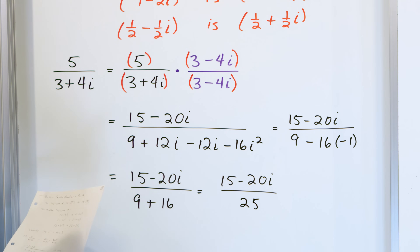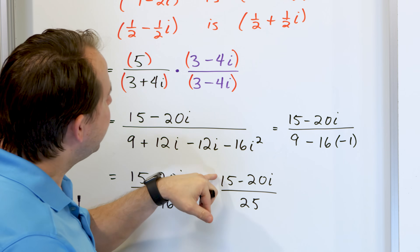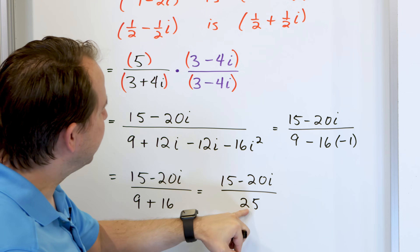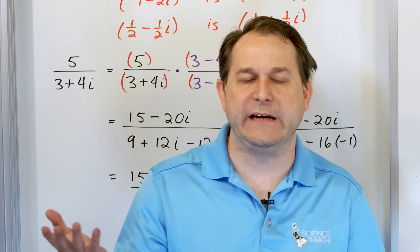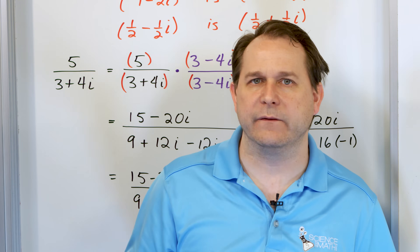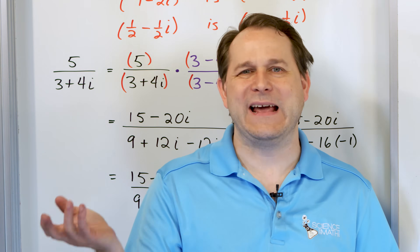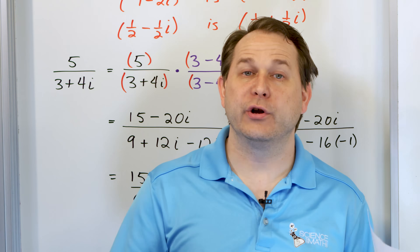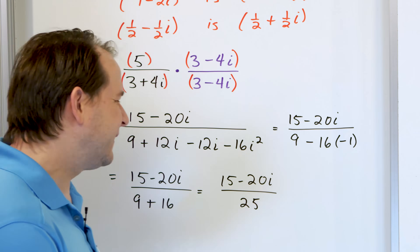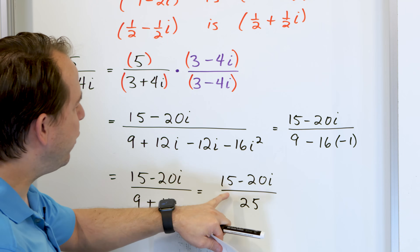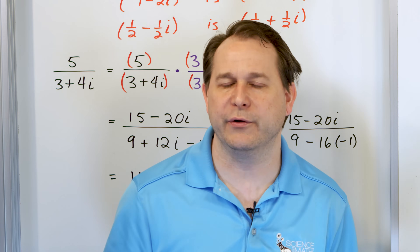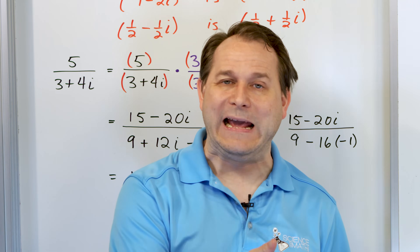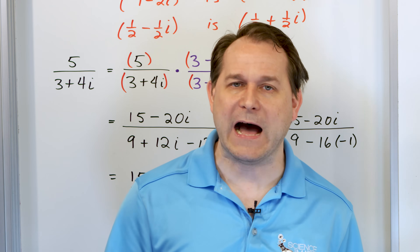Nine plus sixteen gives us twenty-five. So we have fifteen minus twenty i over twenty-five. You could stop there, but notice this is divisible by five, this is divisible by five, and this is divisible by five. You want to cancel the common factor of five from top and bottom, so we factor a five out of the numerator.